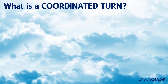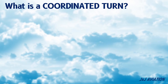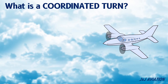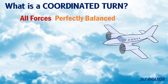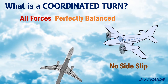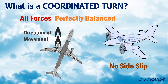What is a coordinated turn? A coordinated turn in an aircraft is a turn in which all the forces are perfectly balanced. In this turn, there is no sideslip. Sideslip is defined as the angle between the direction of movement of an aircraft and the longitudinal axis.